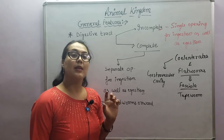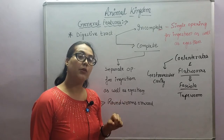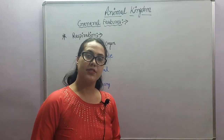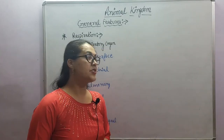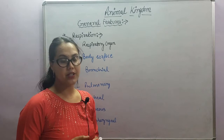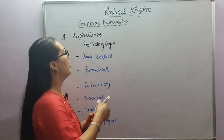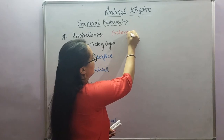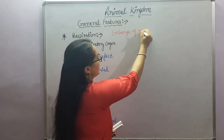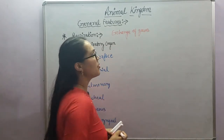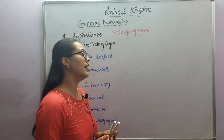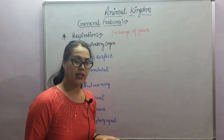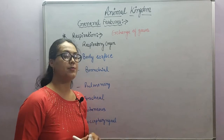Next general character we are going to take is respiration - in which animal group, in what manner respiration occurs. Respiration is the term we use for the exchange of gases. Basically, in aerobic respiration, oxygen intake happens and carbon dioxide is released out.